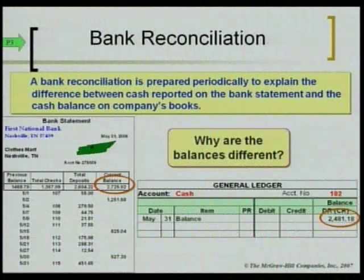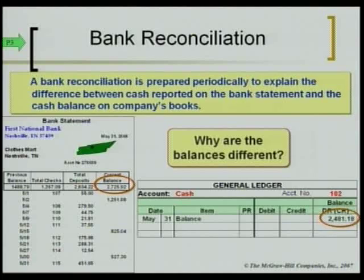What we're learning about today is a bank reconciliation. When you get a bank statement at the end of the month, the balance it shows versus the balance your books show — your running checking balance — are going to be different. A reconciliation figures out why those amounts differ and hopefully reconciles the bank account.